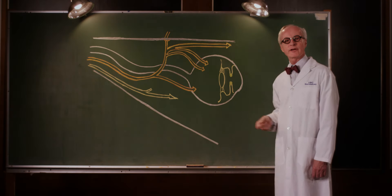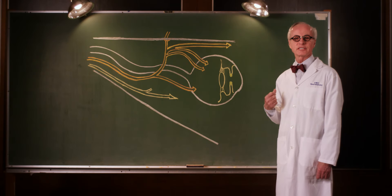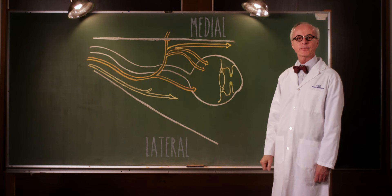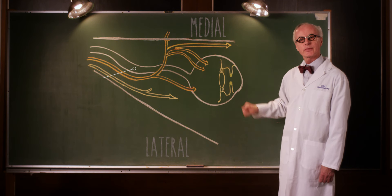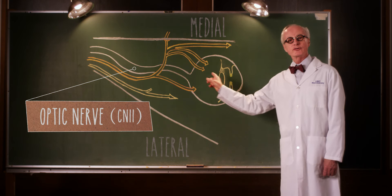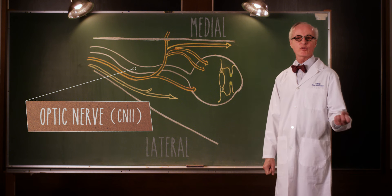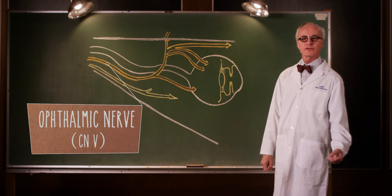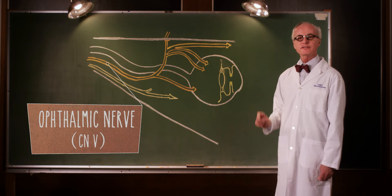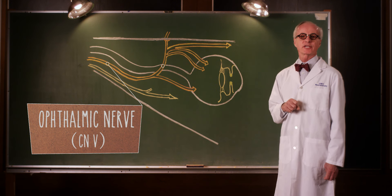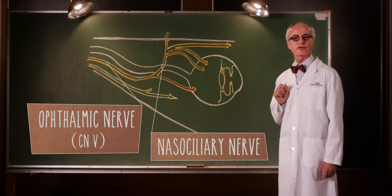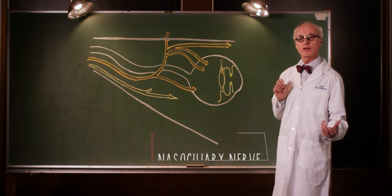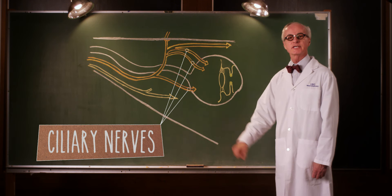Here is a sketch of one of the orbits as seen from above. This is medial and this is lateral. The eyeball is here. The optic nerve carries light information to the brain. Here is a branch of five, the ophthalmic nerve. This important branch of the ophthalmic nerve is the nasociliary nerve, which carries general sensation from the eyeball through these ciliary nerves here.